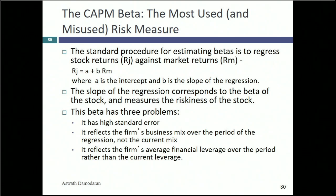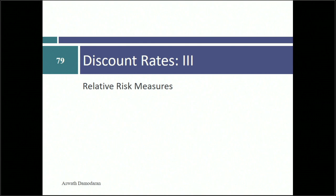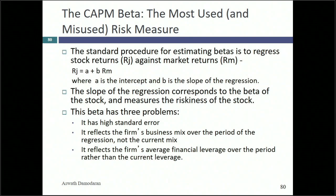Now let's talk about betas. I prefer to use the term 'relative risk' — that's what a beta is. When I say the beta is 1.2, I'm saying this stock is 1.2 times more risky than the average stock. I'm going to start with the way I was taught betas: run a regression of returns on the stock against returns on the market index, and the slope of the line is the beta. I'll argue that is a horrifically bad way to think about betas — it turns beta into just a statistical number from a regression. I'm going to make three arguments why regression betas are so bad.